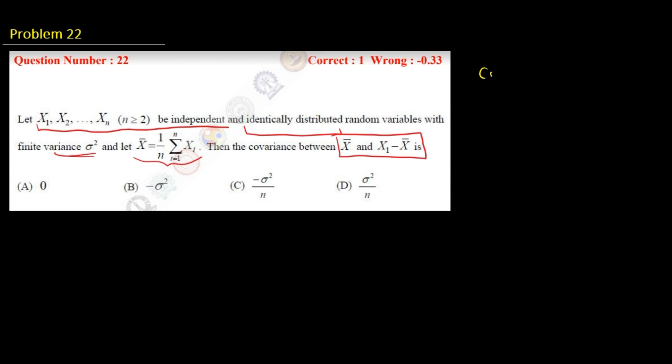So covariance of x, y is defined as expectation of xy minus expectation of x into expectation of y.